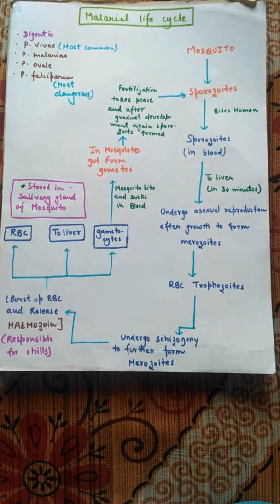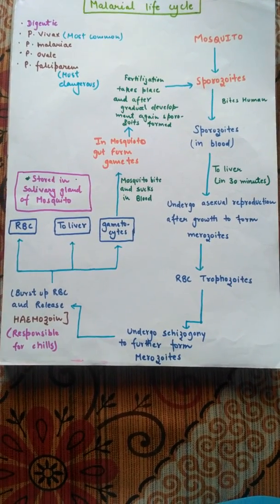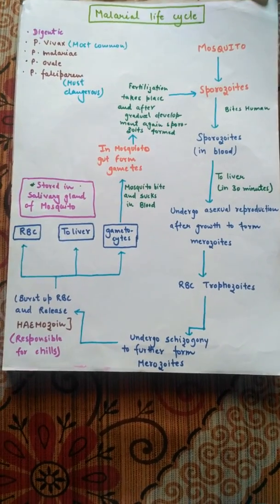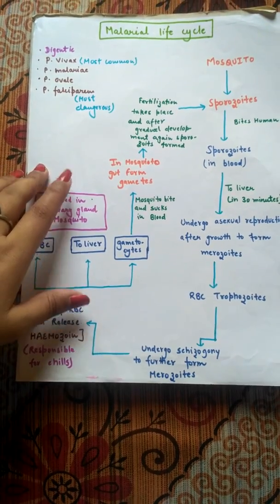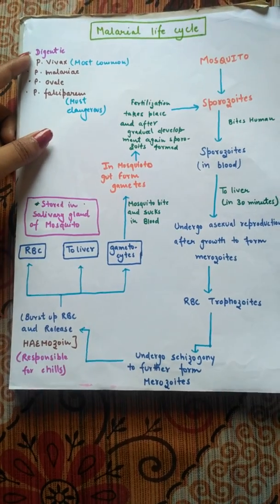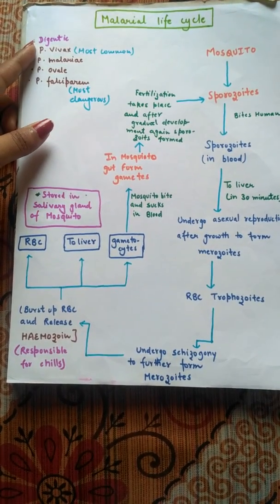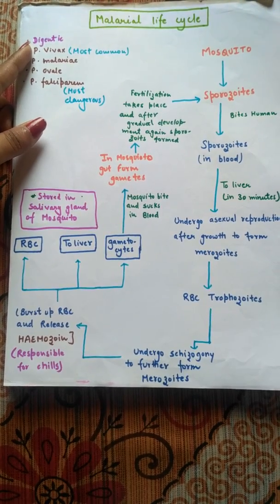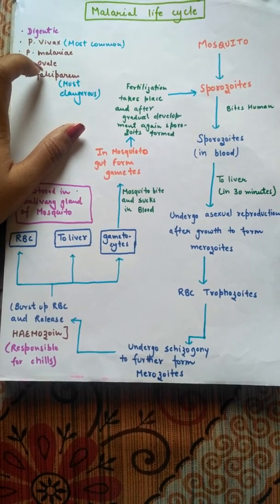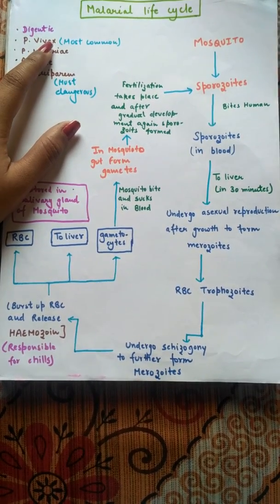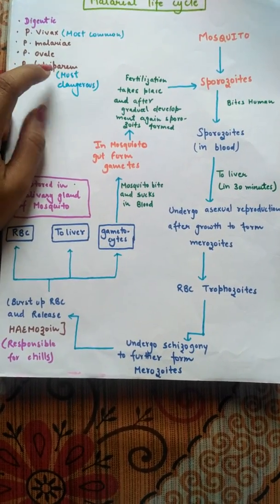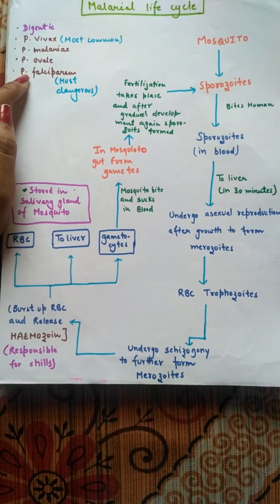Malaria is a disease caused by the protozoa Plasmodium. There are many different species of Plasmodium: Plasmodium vivax, Plasmodium malariae, Plasmodium ovale, and Plasmodium falciparum. Among these, vivax is the most common species and falciparum is the most dangerous species of this Plasmodium protozoa.